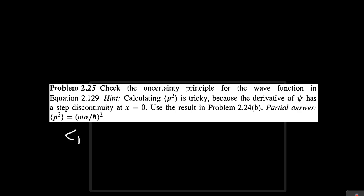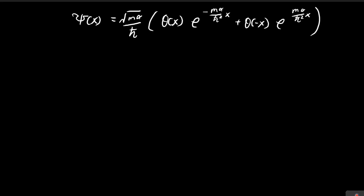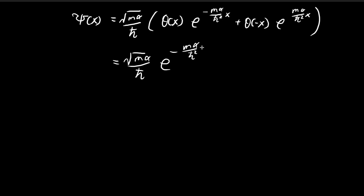In this video, we're going to find the expected value of momentum squared. In order to do that, we're going to use this expression for ξ. This looks a bit different from what we had before, but it's just another way of writing out the original ξ — specifically, a way of getting rid of the absolute value of x.